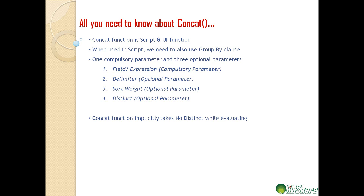The concat function implicitly takes no distinct qualifier while evaluating, so when you don't specify anything it will automatically give you all duplicate values. If you want only distinct values, you have to explicitly call the distinct qualifier. The default sort weight is ascending, but you can also specify descending. Let's look at some examples of how to use the concat function in script and in the UI, covering everything we've learned so far.